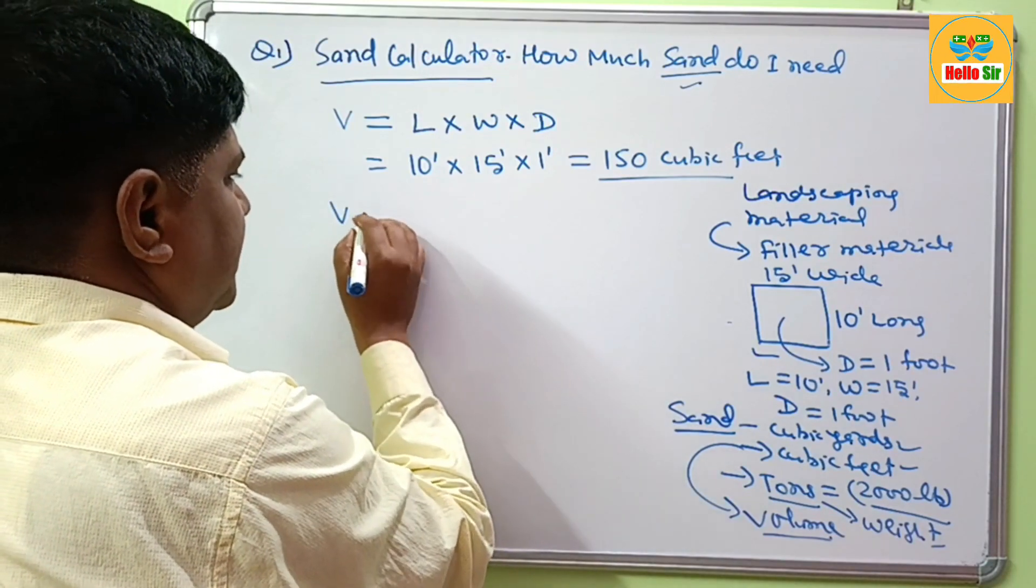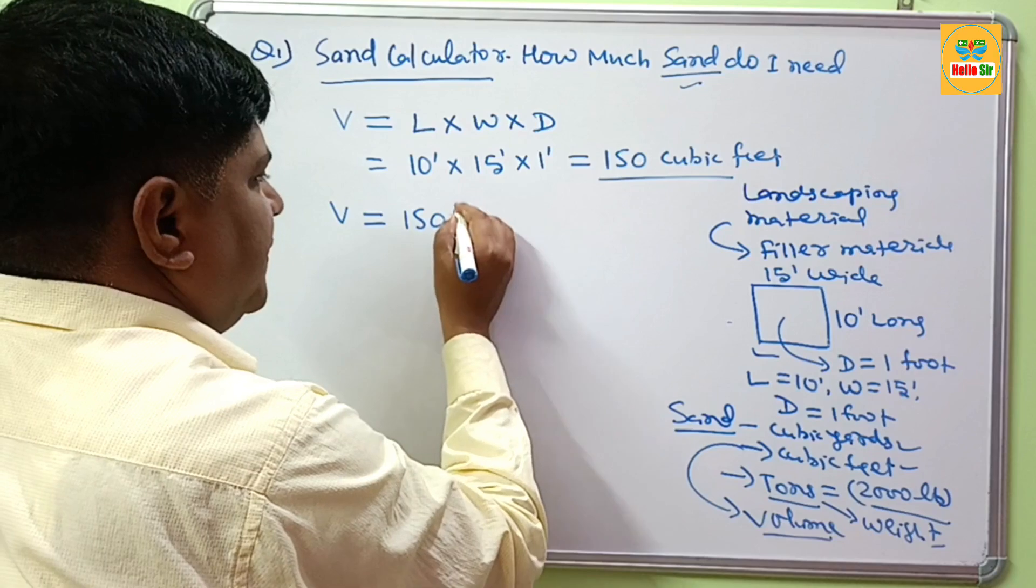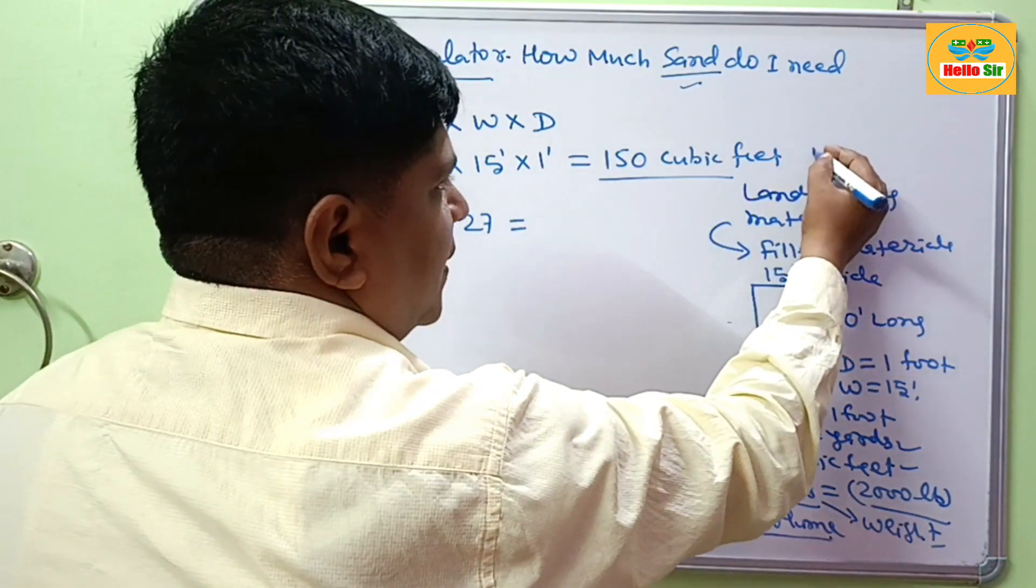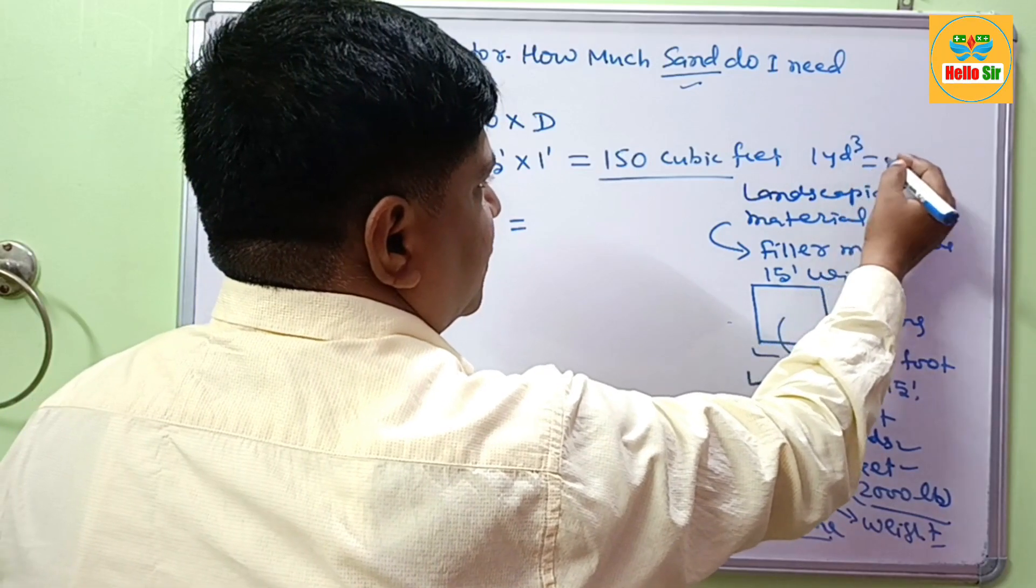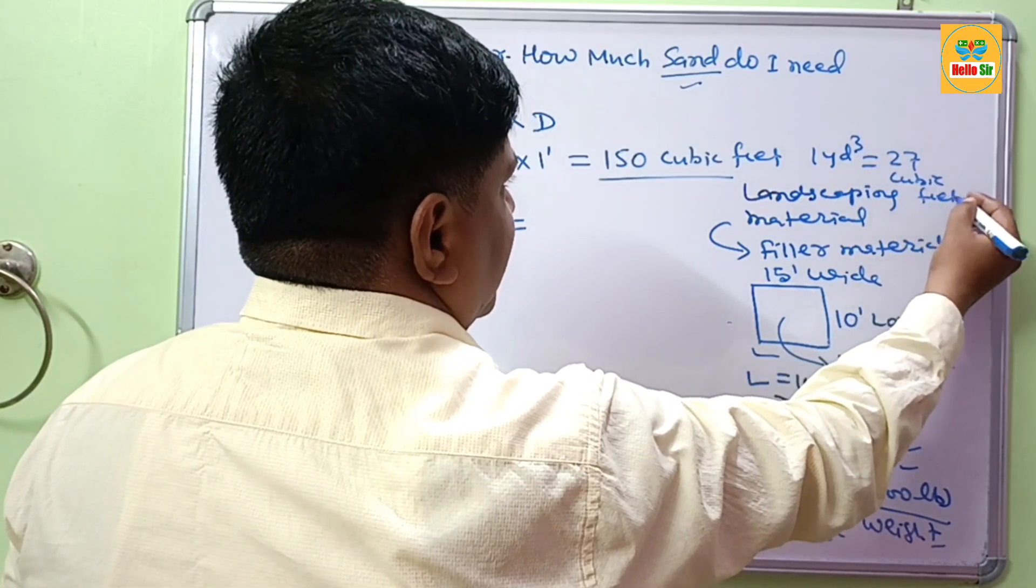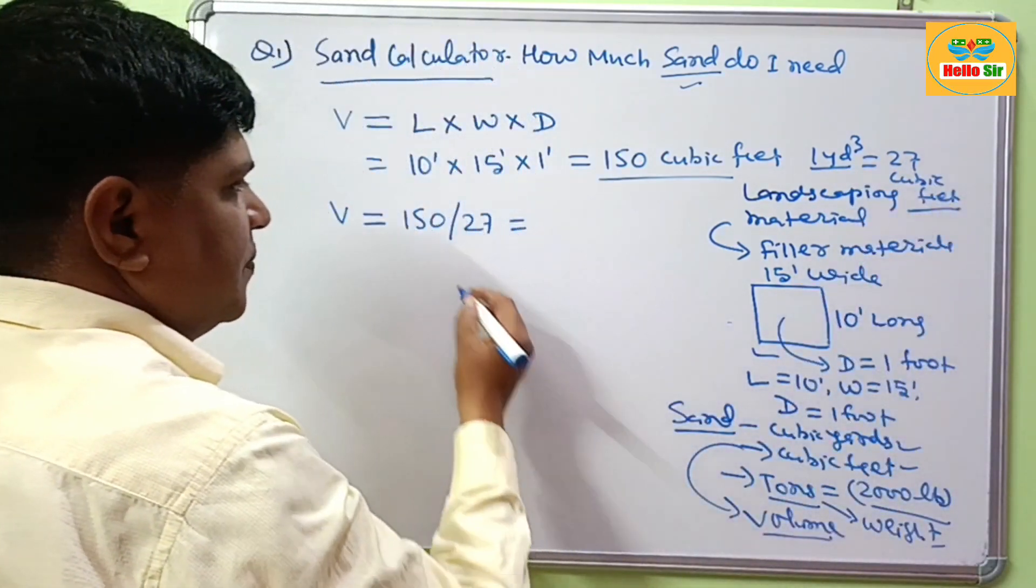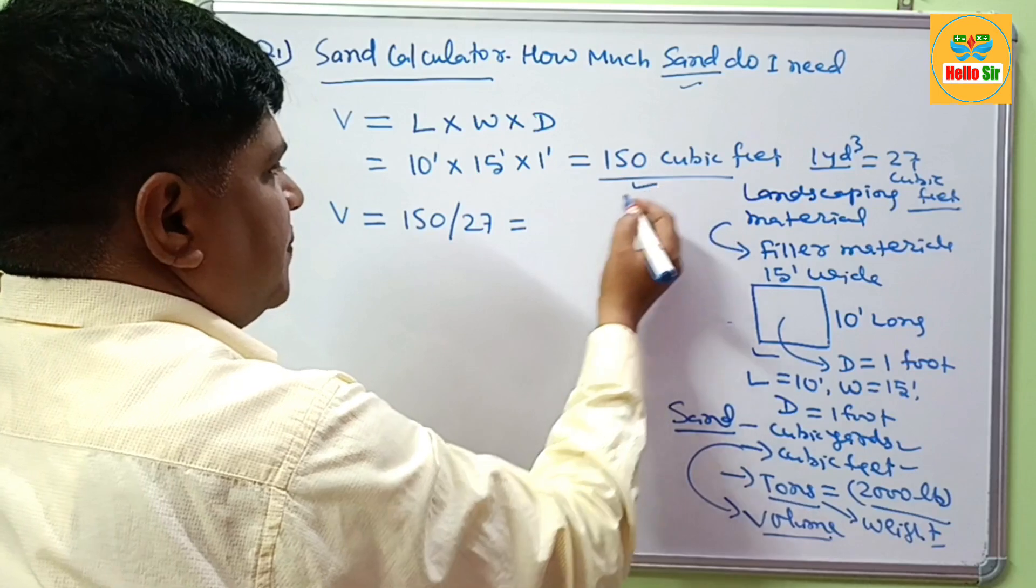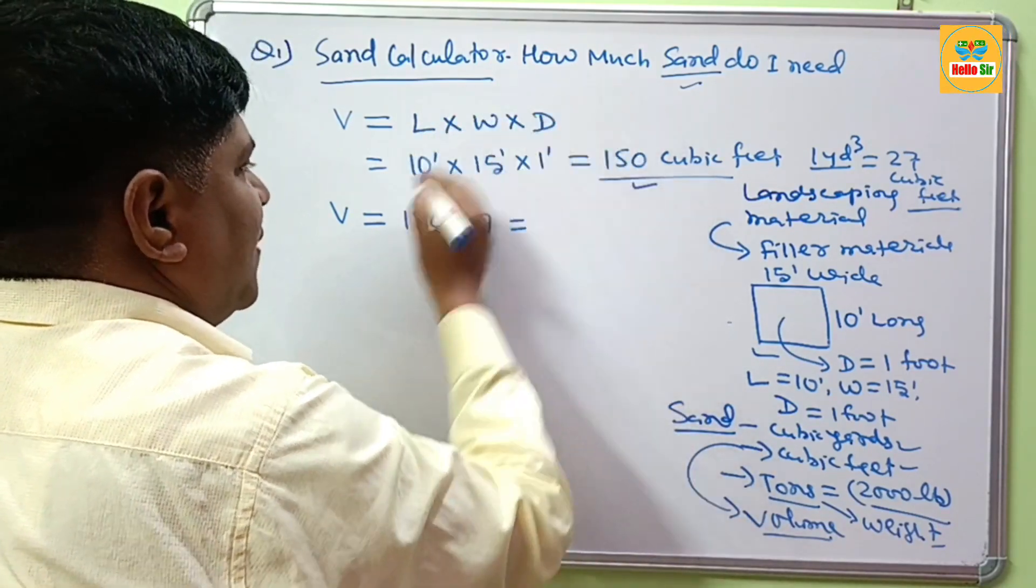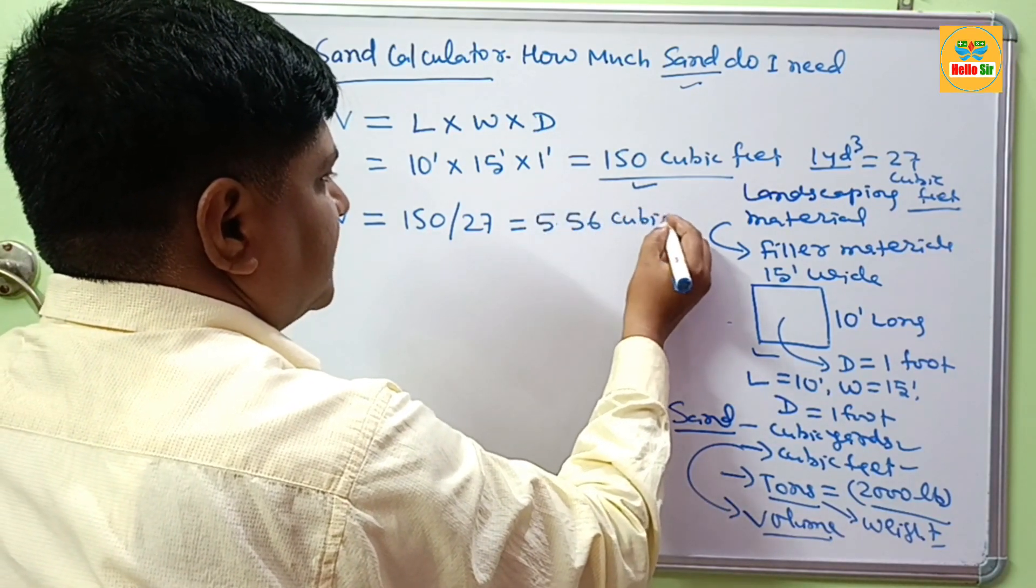If you want to know this measurement in cubic yards, divide 150 cubic feet by 27, because one cubic yard equals 27 cubic feet. Remember this. Your cubic feet measurement is divided by 27 to find the volume of sand quantity in cubic yards. This will come to 5.56 cubic yards.